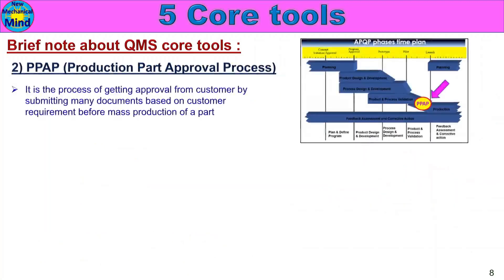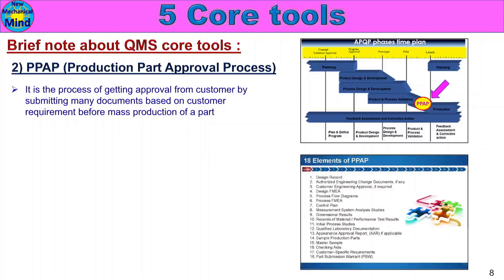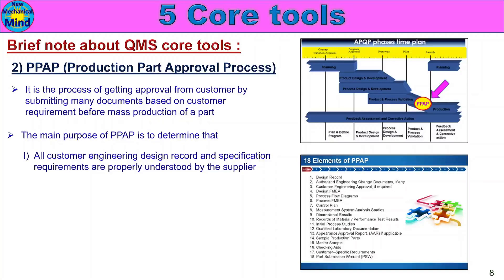Next, PPAP — Production Part Approval Process. It is the process of getting approval from the customer by submitting many documents based on customer requirements before mass production of your part. The main purpose of PPAP is to determine that all customer engineering design records and specification requirements are properly understood by the supplier.